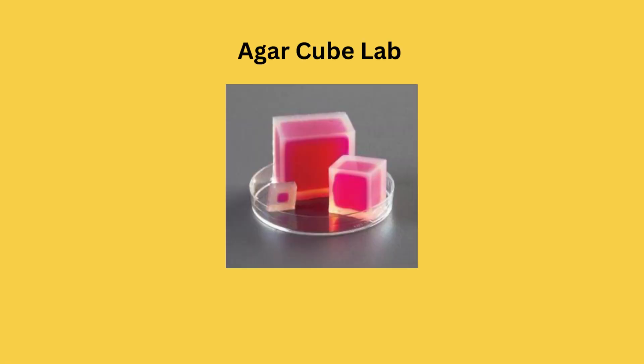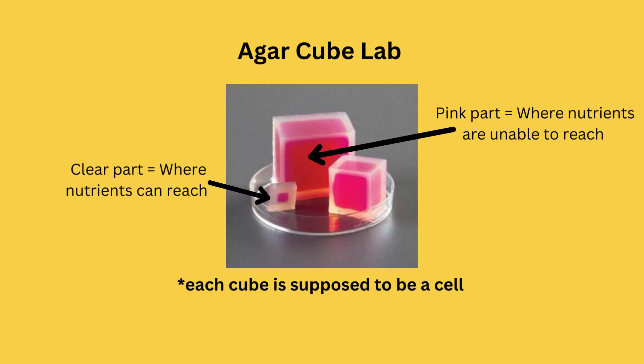A lab that I did when I took AP Bio can really help with understanding this concept. This lab is called the agar cube lab, in which these agar cubes in different sizes are supposed to resemble a cell. I won't go over all the details of the lab, but I will point out that the clear part of the cube is supposed to resemble where nutrients are able to enter, and the pink part resembles where nutrients are unable to enter.